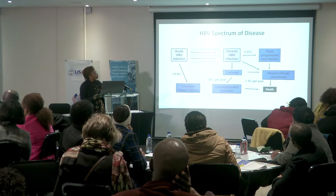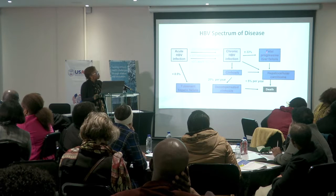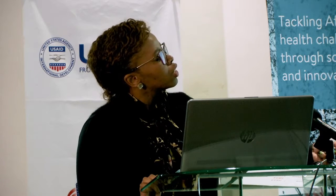From the chronic phase, 33% can immediately move to fatal progressive liver failure. Others would develop cirrhosis — liver scarring — and 20% per year of these would have decompensated cirrhosis, where they start to show signs and symptoms of all the cycles happening in the liver being disarranged. Cirrhosis can then lead directly to hepatocellular carcinoma, and with carcinoma, less than 5% per year could actually die.